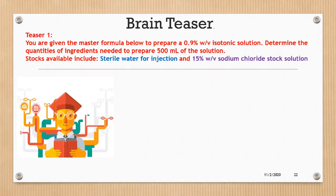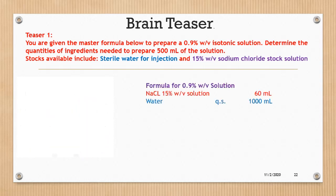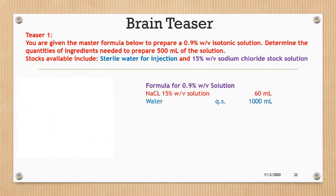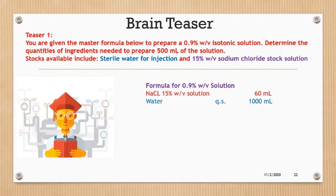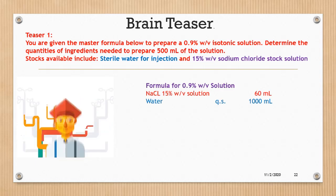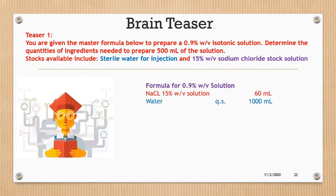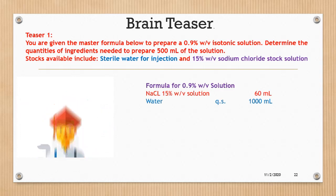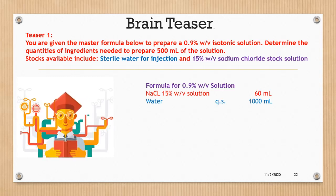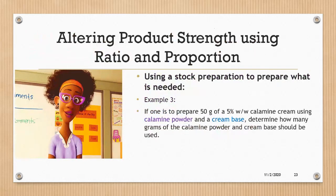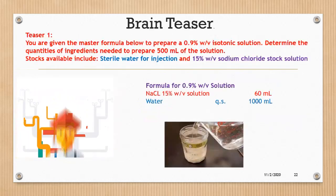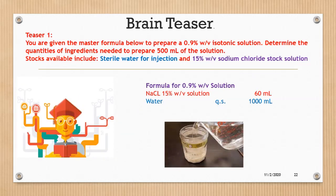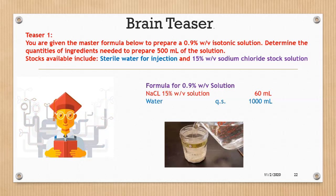Another practice problem: using the same master formula, prepare a 0.9% isotonic solution but for a quantity of 500 mL instead of 1000 mL. Clearly all quantities are halved, but apply the same calculation steps as before to confirm the answer.